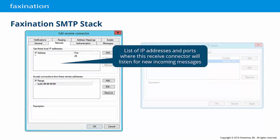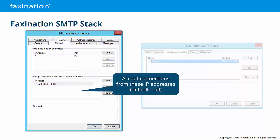The Network tab allows you to set the IP addresses and port numbers that will be monitored for incoming SMTP connections. Port 25 is the default port for all SMTP communications, but you can specify another port to meet certain deployment goals or for firewall traversal. You may also define specific IP addresses or ranges of IP addresses that are allowed to make connections to the Faxonation SMTP stack. Connection attempts from outside these ranges will be rejected with no response.